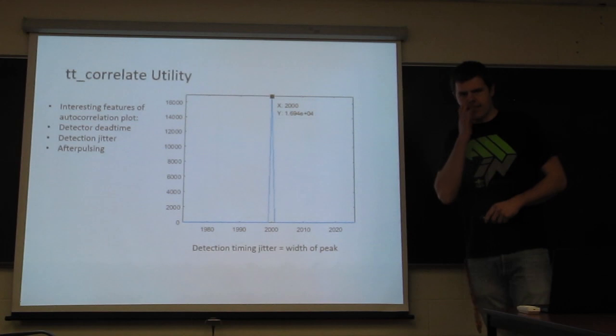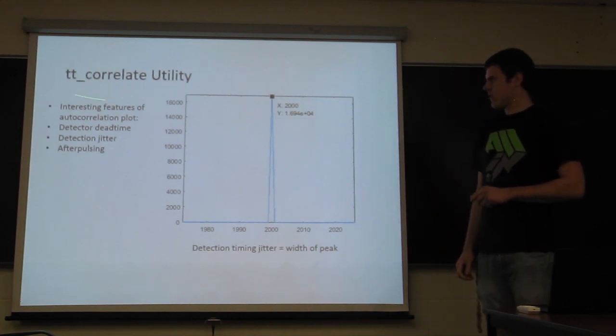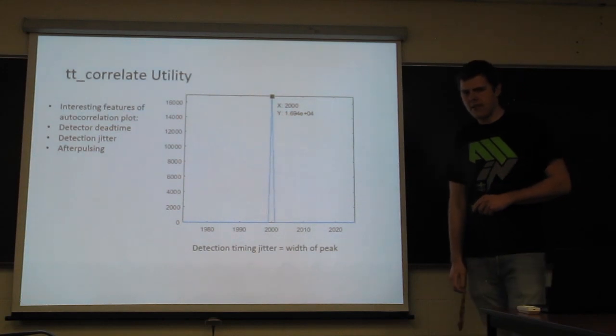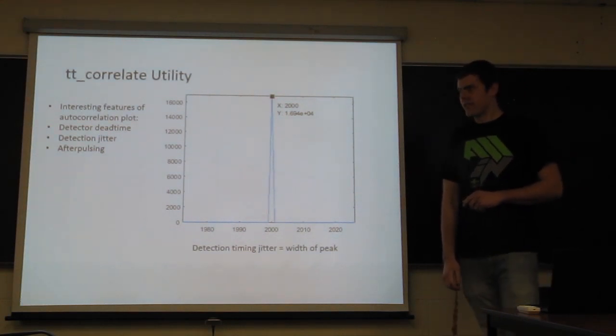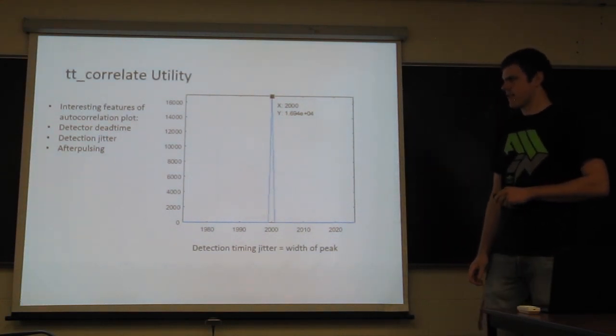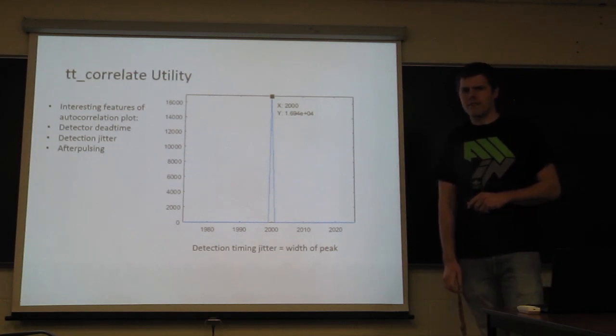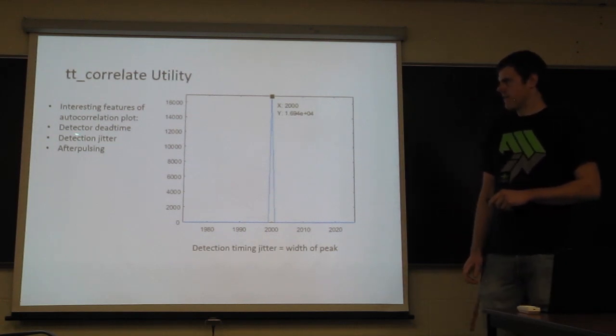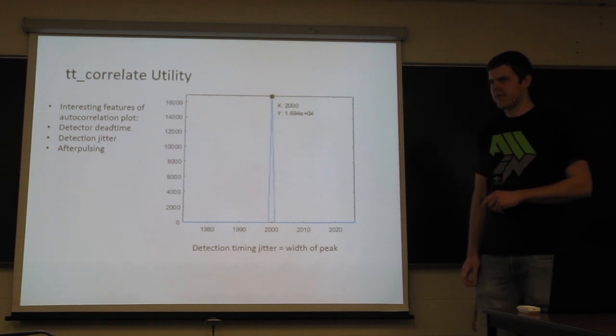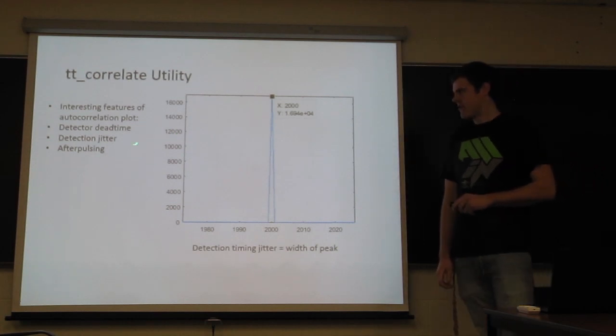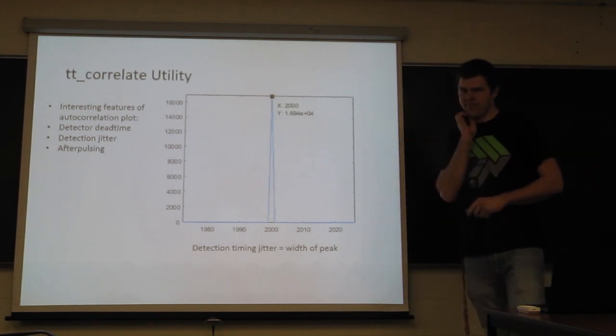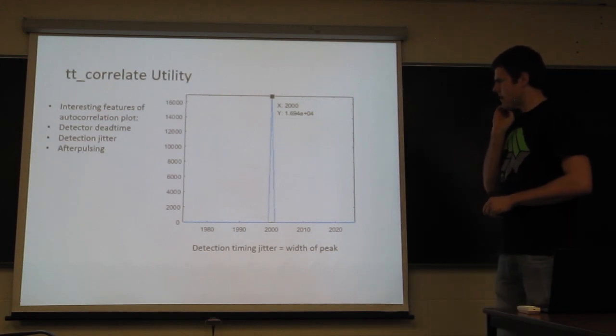So one of the useful features of doing this correlation between two detectors is if you do the autocorrelation where it's one detector, you can actually extract some features about your detector. Some of these being the dead time of the detector, the detector jitter, and the after pulsing.